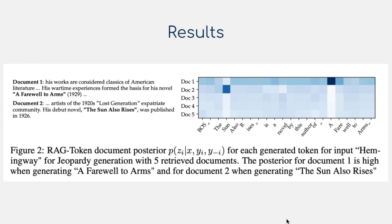RAG-token and RAG-sequence are two different ways of marginalizing across all retrieved documents Z to produce output Y. This visualization looks at how much each of the five retrieved documents impacted a generated token Y_i. Darker blue squares indicate a document had a large impact — for example, document two had a massive impact on generating 'Sun', and another document had a large impact on generating 'A'. These correspond to two different book titles by the author — one document contains information about A Farewell to Arms and document two contains information about The Sun Also Rises — showing how probability is distributed across the latent documents Z_i to generate the output sequence Y.